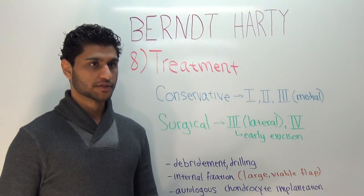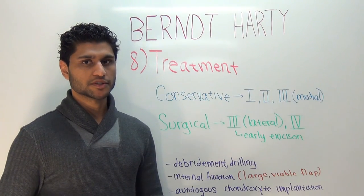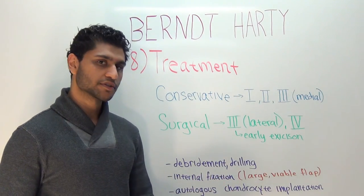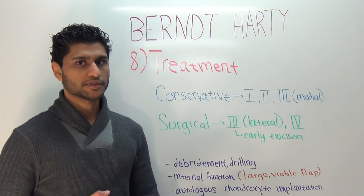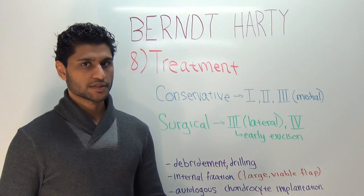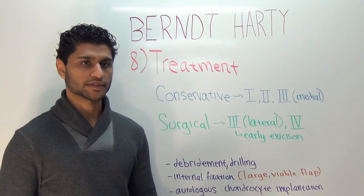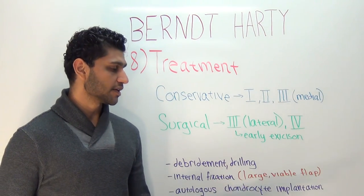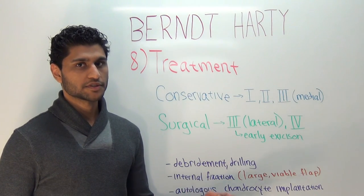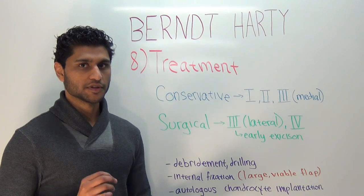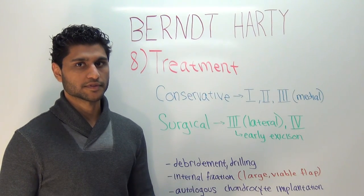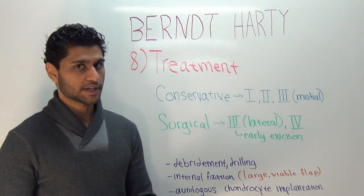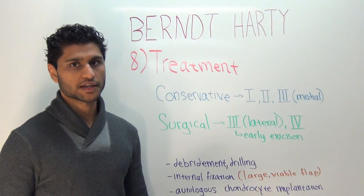Conservative treatment can be used for Stage 1, 2, and 3 medial lesions, whereas early surgical intervention is recommended for Stage 3 lateral and Stage 4 lesions. The first-line surgical intervention, regardless of stage, is debridement and curettage with microfracture and drilling, with the goal of recruiting mesenchymal stem cells to differentiate into the defect. Another option is internal fixation, which can be used if the flap is viable and large enough — though some surgeons are hesitant because placing hardware may inadvertently fracture the fragment, making it non-viable. If first-line treatment fails, autologous chondrocyte implantation is a newer option that is gaining more popularity.